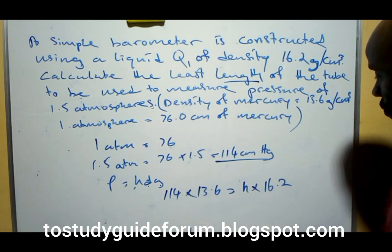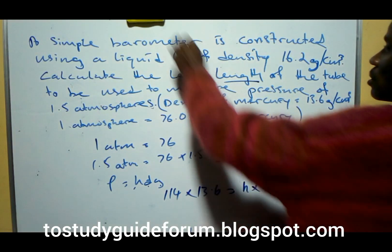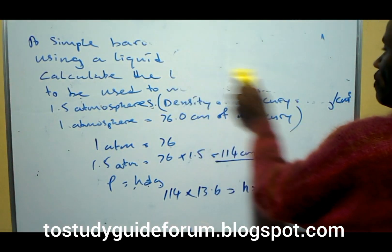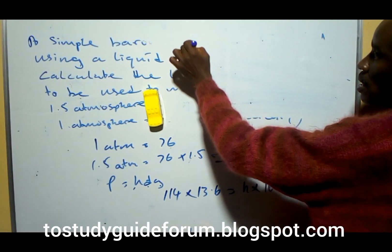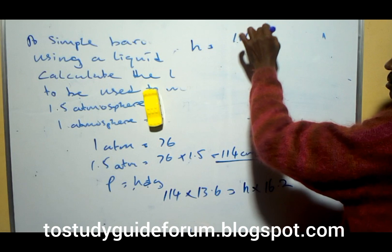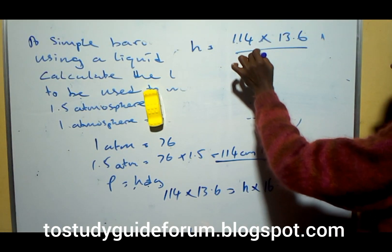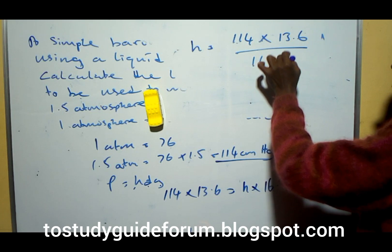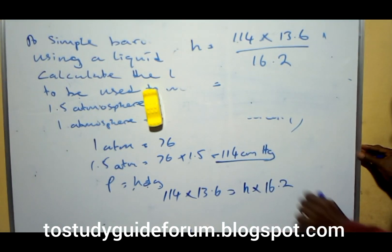So if we will make H the subject of the formula, making H the subject of the formula, we will have H is equal to, that's the height, times all over 16.2.